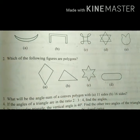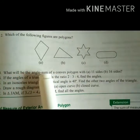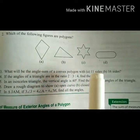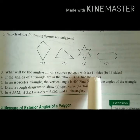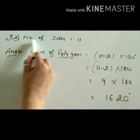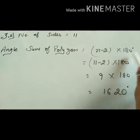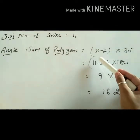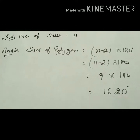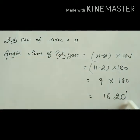Question number 3: What will be the angle sum of a convex polygon with 11 sides? We need to find the sum of all angles of a polygon with 11 sides. Using the formula: angle sum = (n − 2) × 180 degrees, where n = 11. So: (11 − 2) × 180 = 9 × 180 = 1620 degrees.